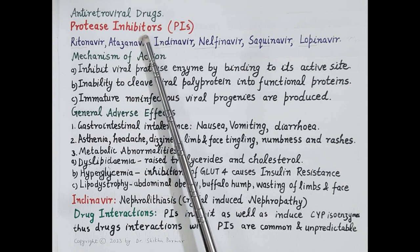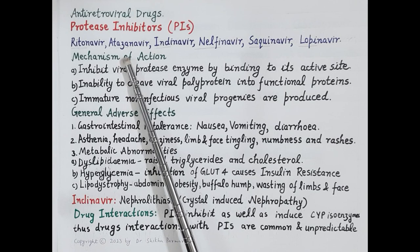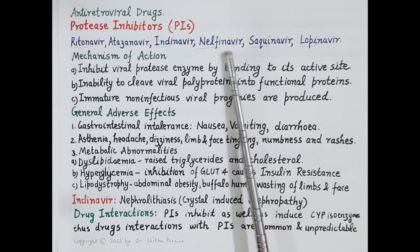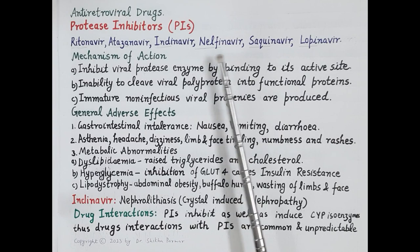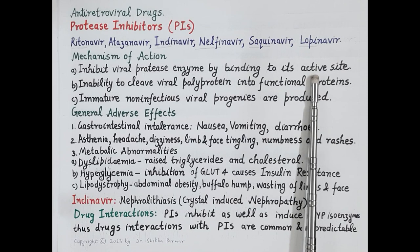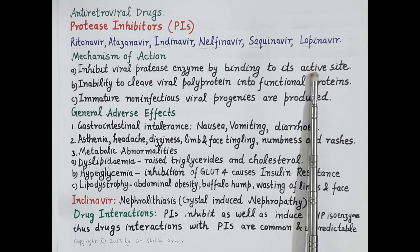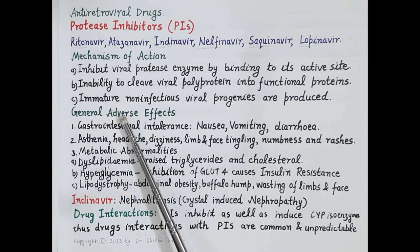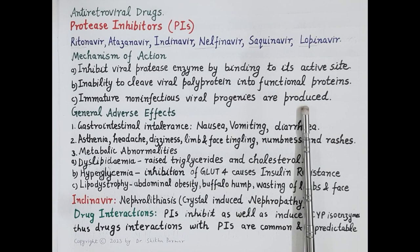The next category of antiretroviral drugs are the protease inhibitors. The drugs include ritonavir, atazanavir, indinavir, nelfinavir, saquinavir, and lopinavir — each ending with 'NAVIR.' These drugs inhibit the viral protease enzyme by binding to its active site. As protease is inhibited, the viral polyprotein is not cleaved into functional proteins, and without functional proteins like reverse transcriptase and integrase, immature and non-infectious viral progenies are produced.